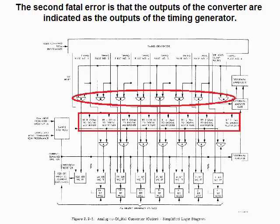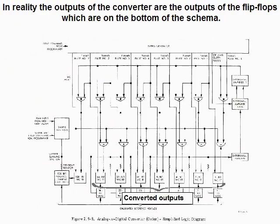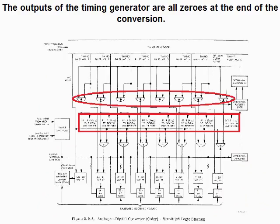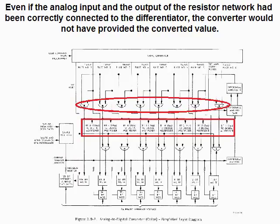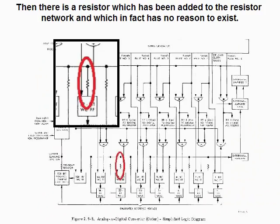The second fatal error is that the outputs of the converter are indicated as the outputs of the timing generator. In reality, the outputs of the converter are the outputs of the flip-flops at the bottom of the schema — the outputs of the timing generator are all zeros at the end of the conversion. Even if the analog input and the output of the resistor network had been correctly connected to the differentiator, the converter would not have provided the converged value. Additionally, there is a resistor which has been added to the resistor network that in fact has no reason to exist.